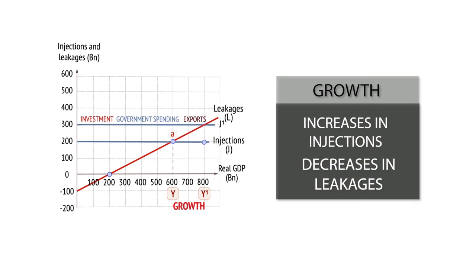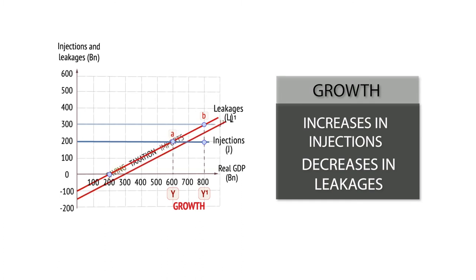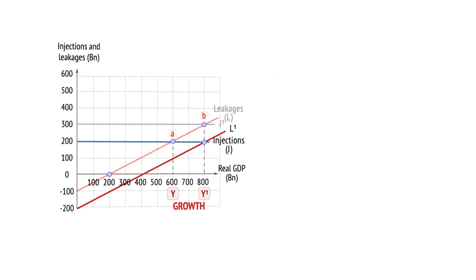Injection-led growth can follow an increase in corporate investment or government spending, or through an increase in exports. Growth can also occur as a result of a fall in savings, in tax levels, and in the value of import spending.